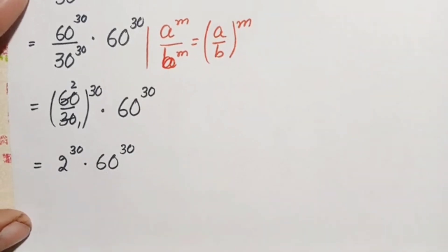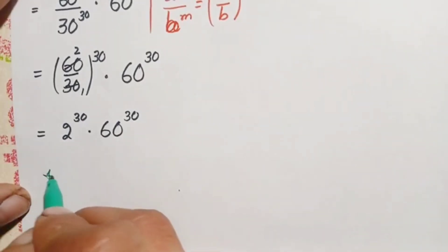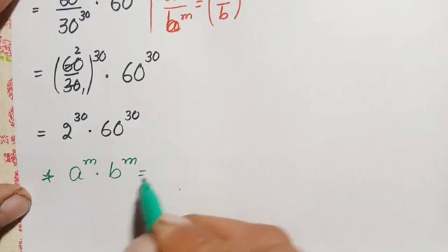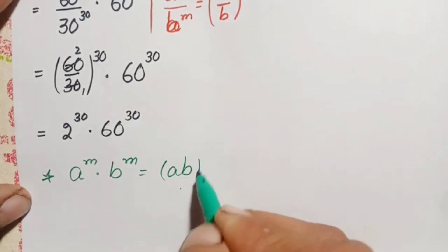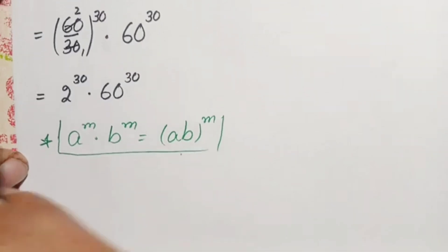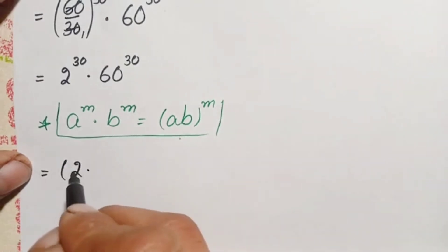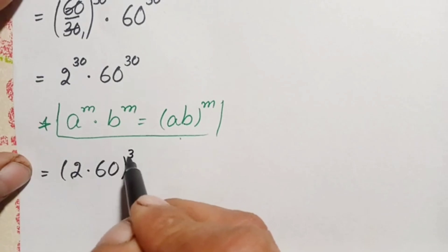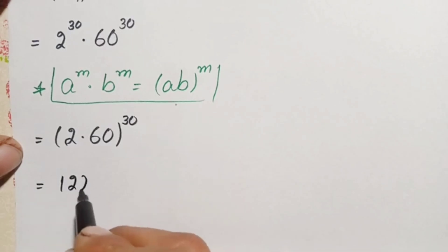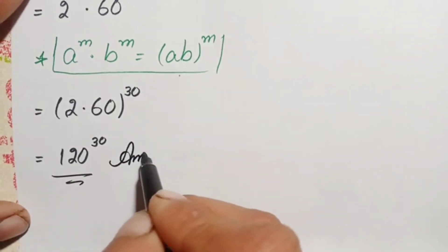These two numbers have the same power, so we use the identity: a raised to power m times b raised to power m equals a times b, all raised to power m. Taking the power common and multiplying the bases gives us 2 times 60, raised to power 30. Since 2 times 60 is 120, the answer is 120 raised to power 30.